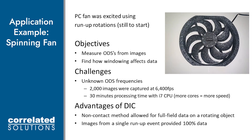In the second application example, we'll cover how windowing affects our data. I wanted to cover a spinning fan for this application for a couple of reasons. One, the geometry is complex, and two, where the constant rotation might present more traditional measurement techniques with very difficult challenges, it's not a problem at all for the VIC-3D high-speed FFT system. The excitation for this test was simply providing power to the fan, which allows us to see the run-up effect each time the fan is activated. Again, in this example, we didn't know what frequencies to expect, so 2000 frames were captured at a rate of 6400 frames per second. And it took about 30 minutes to process this image set.